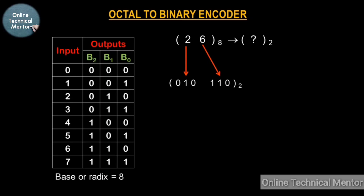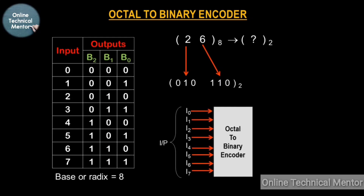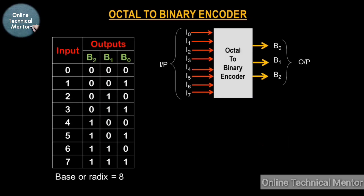We have to design an encoder circuit which will convert an octal number to its binary form. So suppose this is my octal to binary encoder circuit. Since the octal system has 8 inputs, the encoder must also have 8 inputs from I0 to I7, and it has three outputs: B0, B1, and B2.